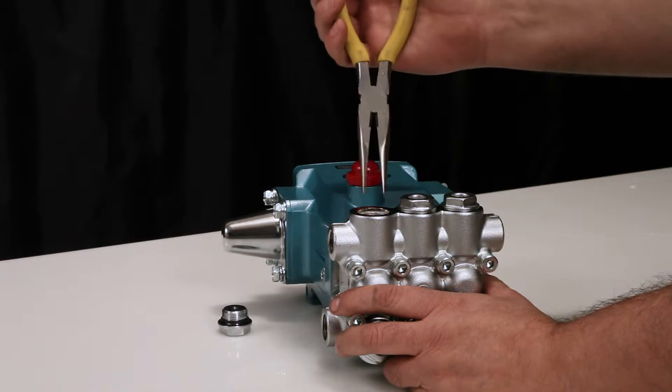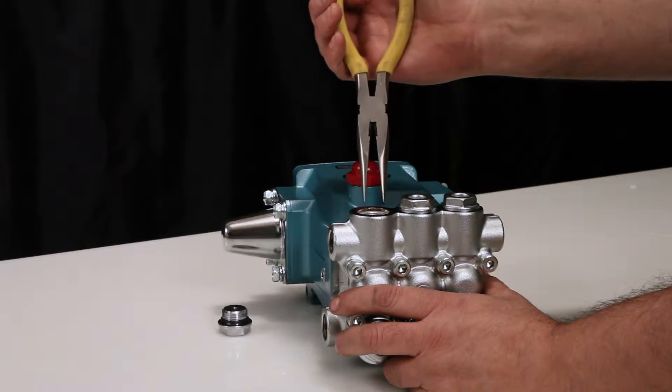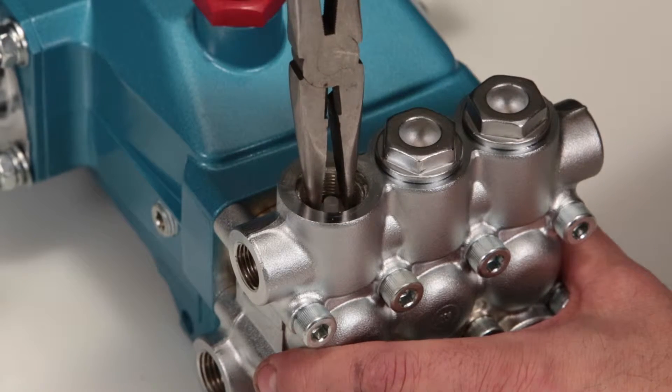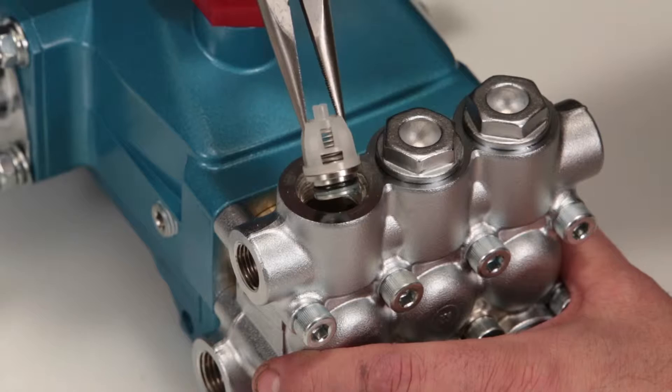To remove the valve assembly, use needle-nose pliers grasping the top of the spring retainer. Give a small twist while pulling away from the manifold to remove.